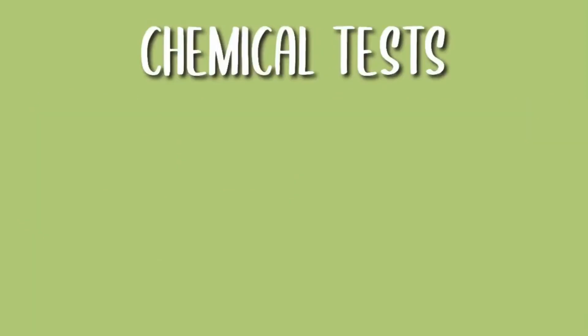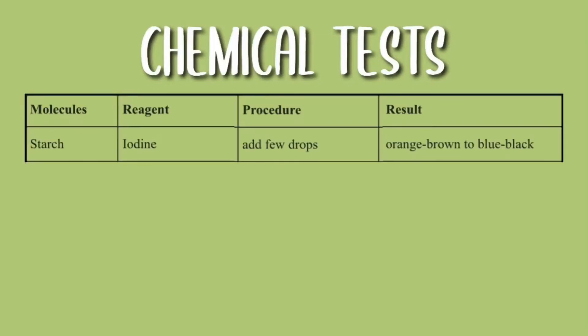Now let's look at the chemical test for these molecules. To test for starch we would use iodine. We would add a few drops and the positive result would be from orange brown to blue black.